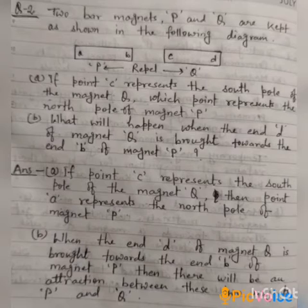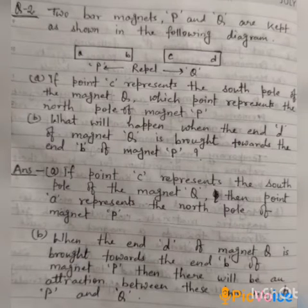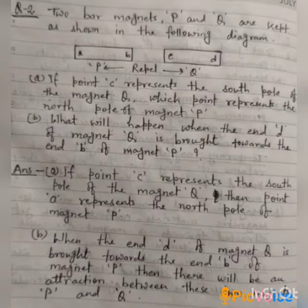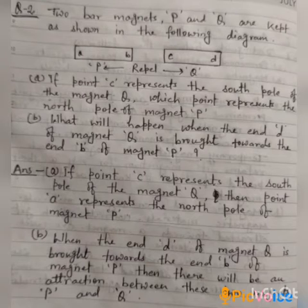Now in question number two: two bar magnets P and Q are kept as shown in the diagram and there is repulsion between these two magnets. The questions are: if point C represents the south pole of magnet Q, which point represents the north pole of magnet P?